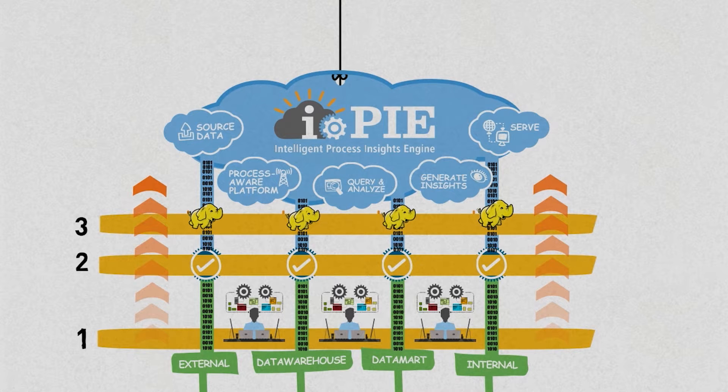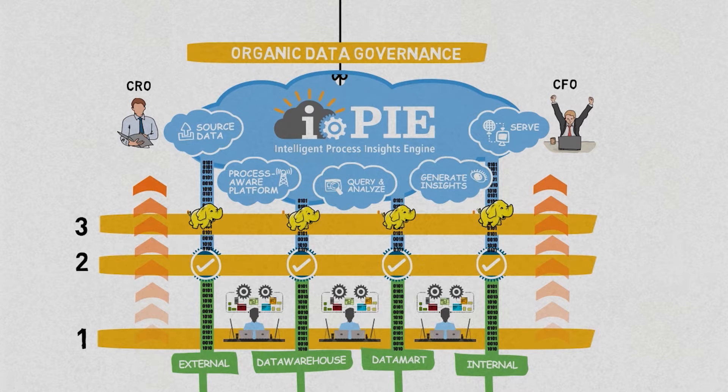Data, once pumped into the Insights Engine, serves the need of a wide variety of stakeholders. Organic data governance ensures prioritization and resolution of data issues. This is Genpact's systems of engagement approach to delivering purpose-built analytics applications.